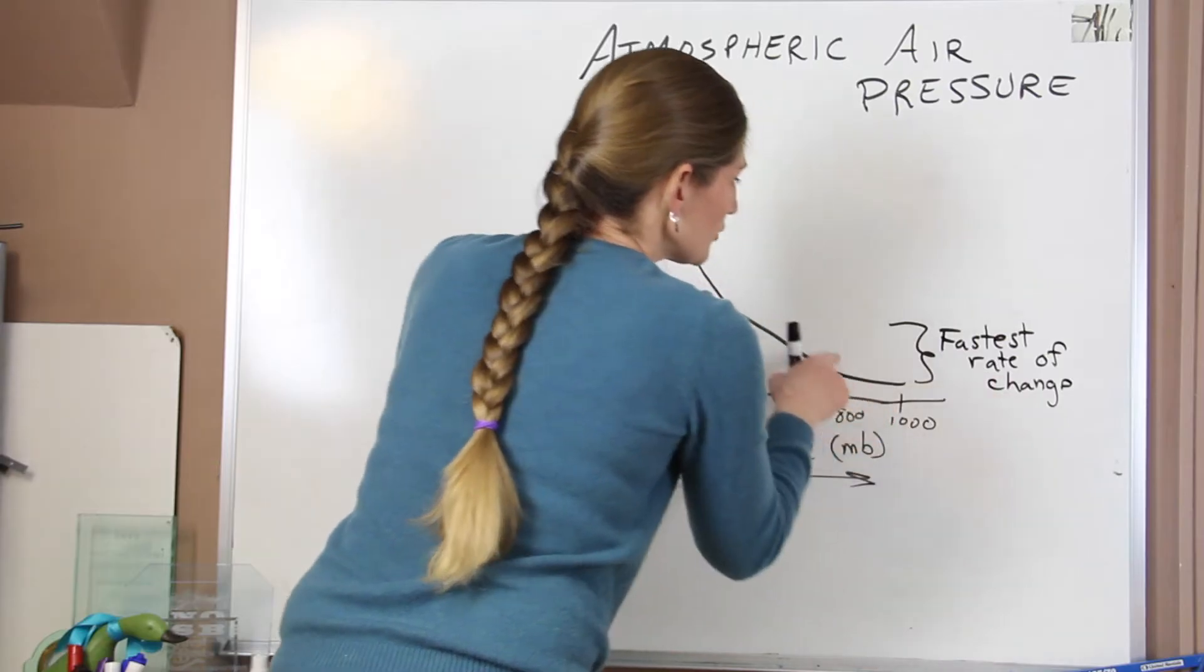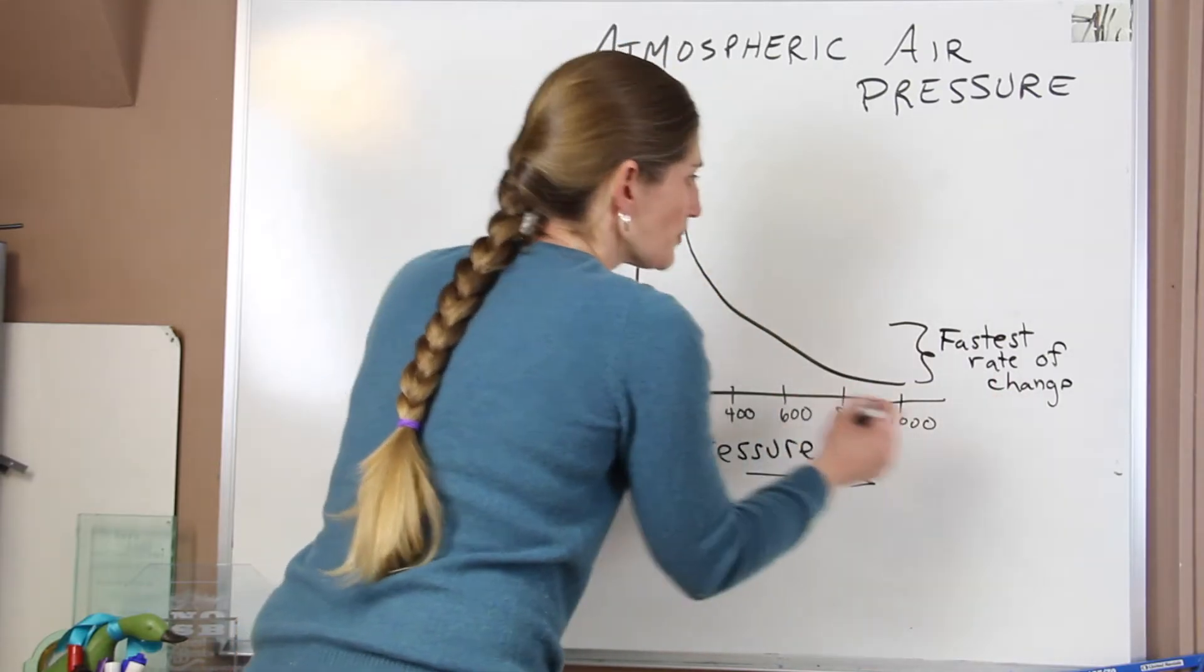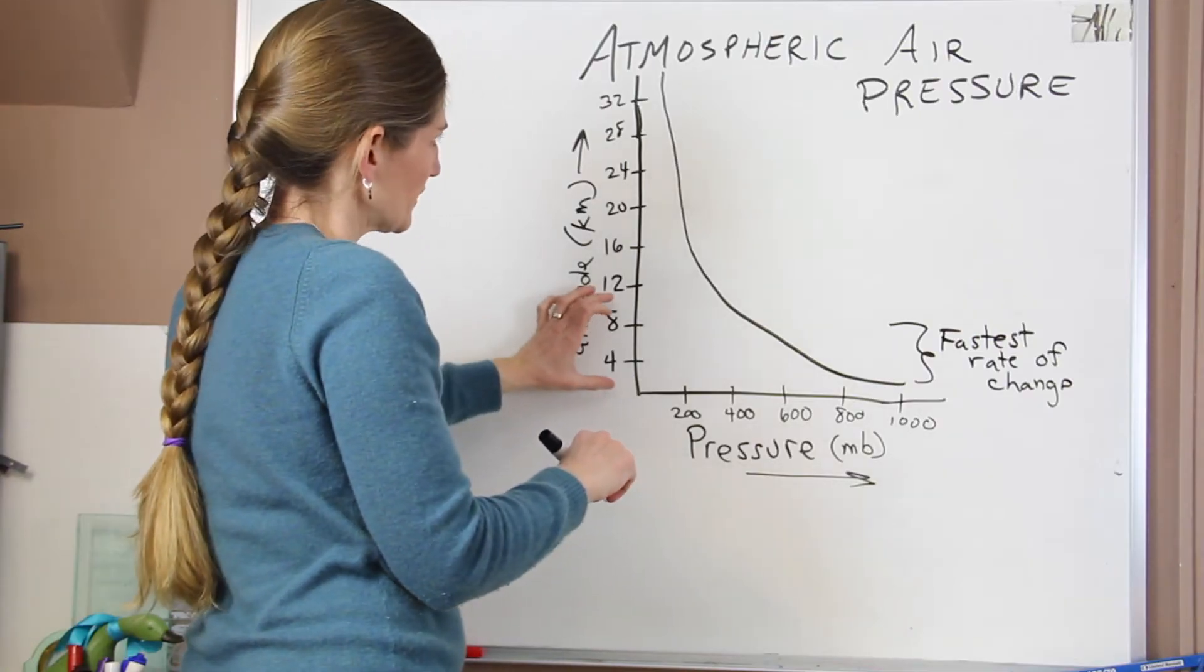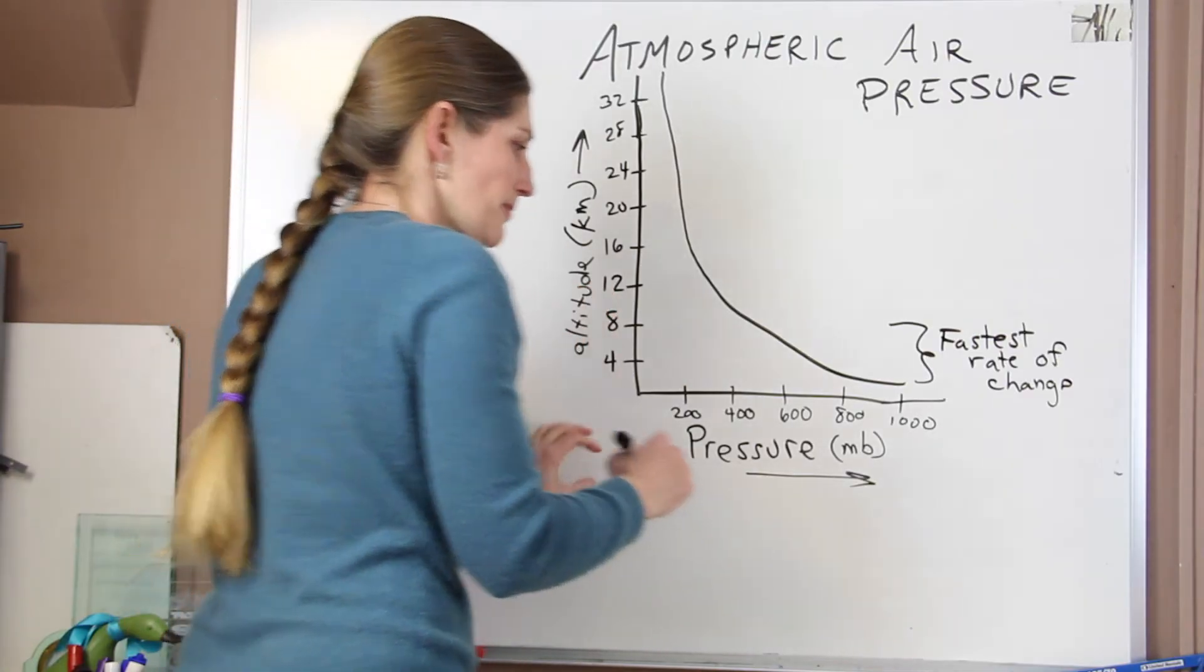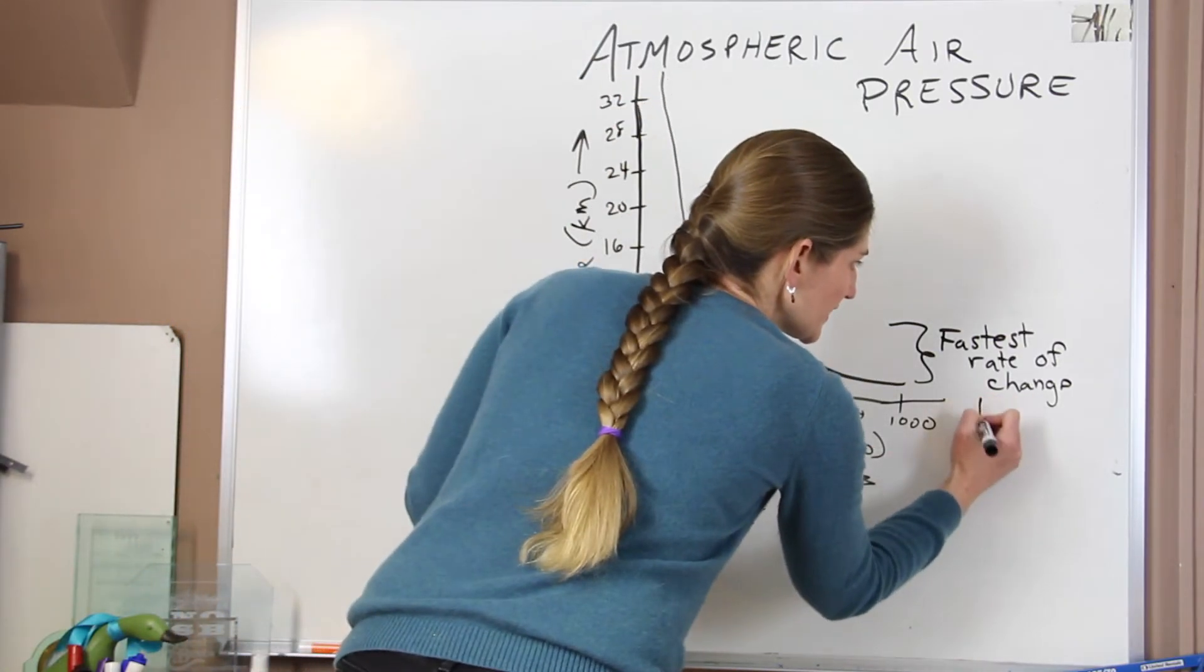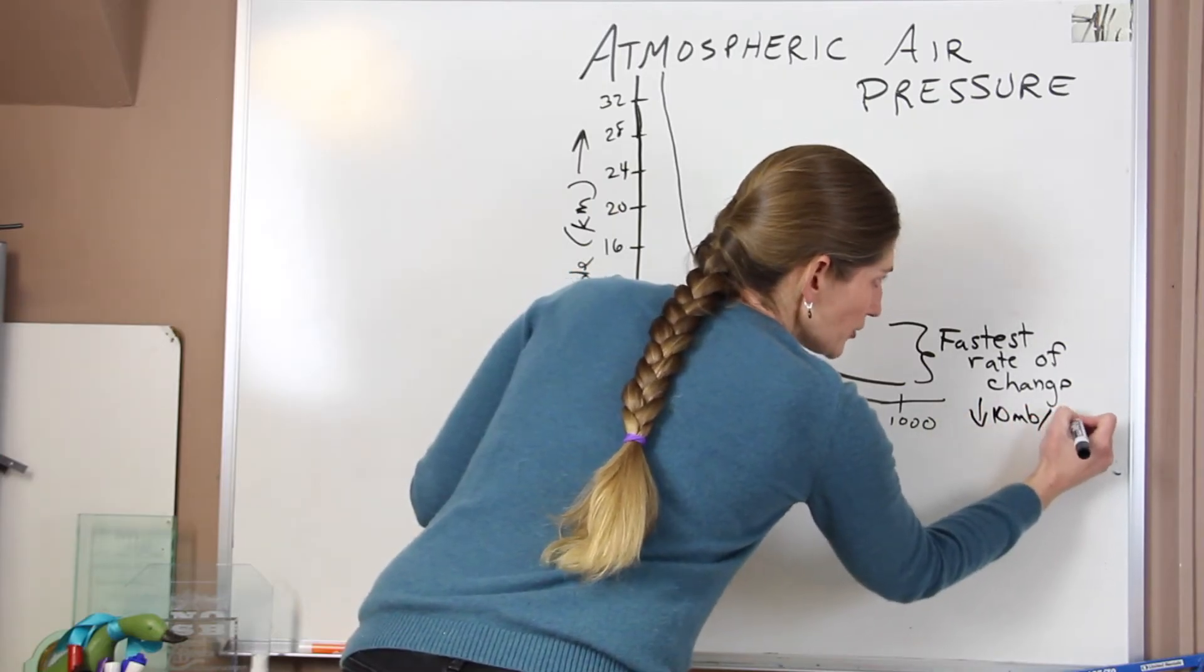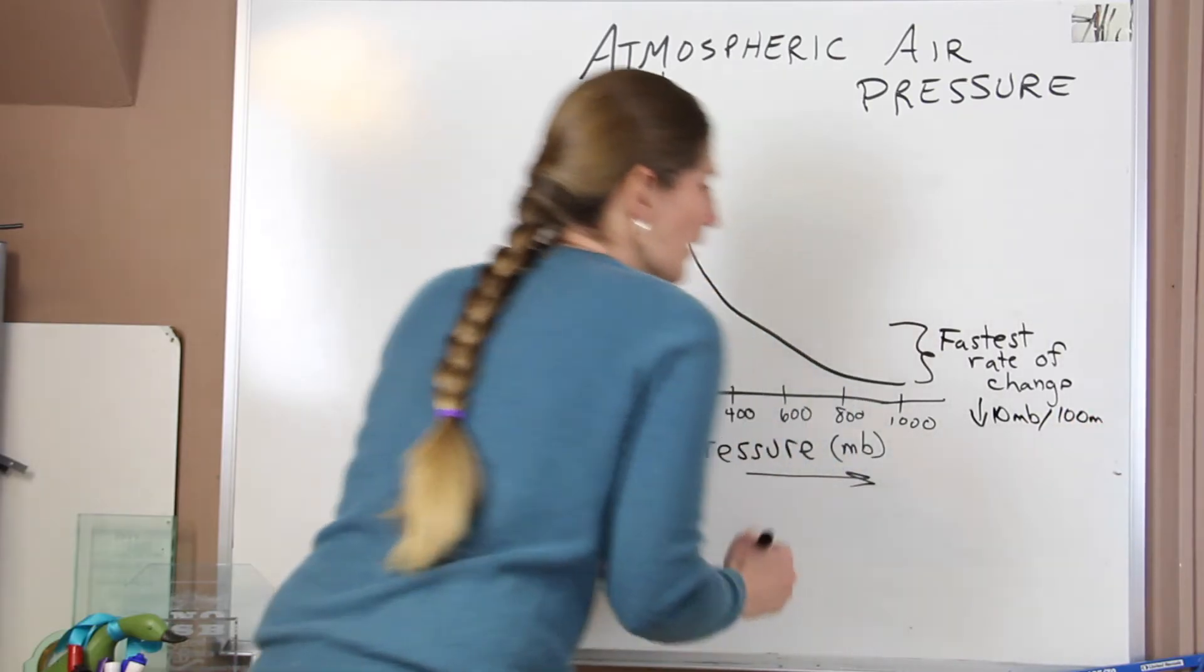So those increases, that's where we notice the change in pressure. That's happening within about the first eight kilometers above the surface. And the change, we see a decrease of 10 millibars for every 100 meters.